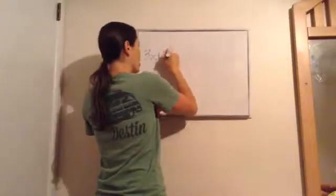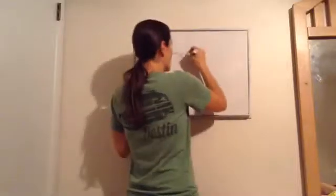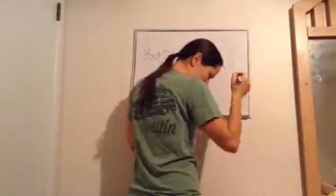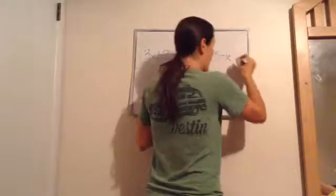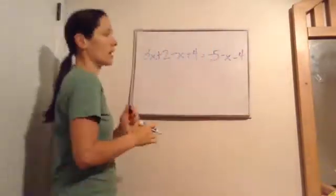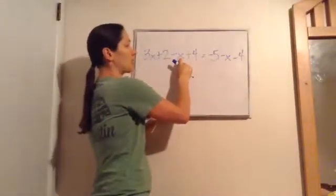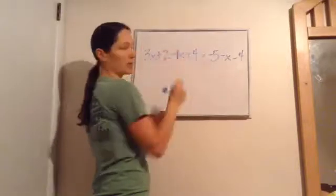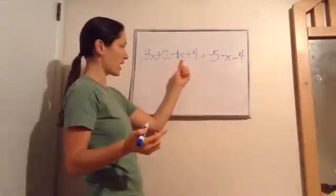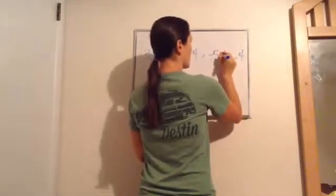Let's do the next problem: 3X plus 2 minus X plus 4 equals negative 5. That's a long one — that is minus X minus 4. Now this may look confusing, but it's not if you take it step by step. First thing I would do is make my X a 1X, because when you have just an X, it's 1X.